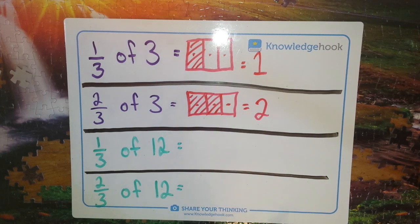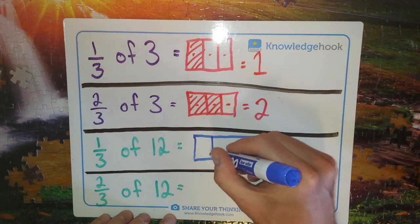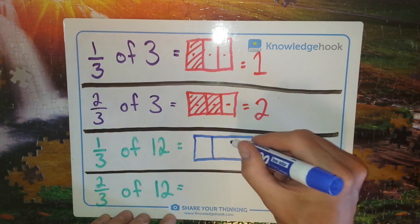So let's try that again, looking at a larger number, but the same sized fractions. So let's start with one third of twelve. Picture three parts because our fraction is in thirds.